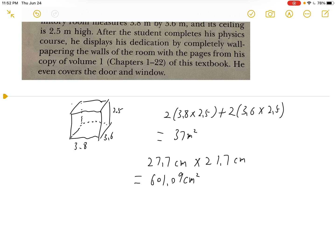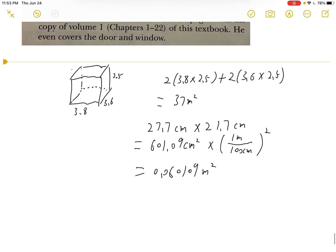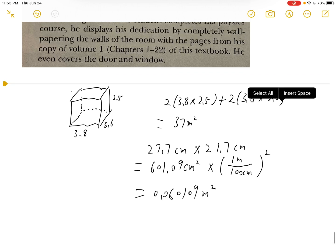We need to convert this to square meters, so we will multiply by 1 meter over 100 centimeters squared, and we will eventually have 0.060109 meters squared.